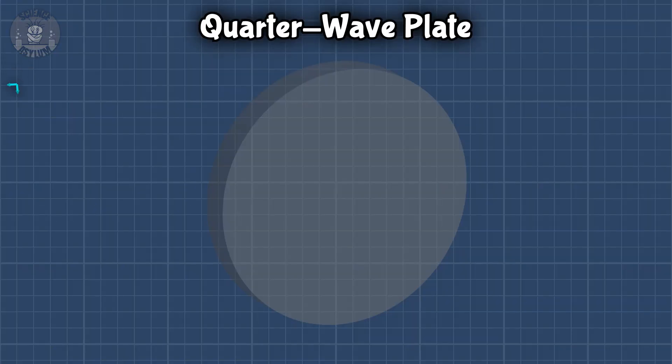3D glasses have one of those birefringent materials in them. If you make the material just the right thickness, the pieces of light will come out one quarter of a wave out of sync. So it shouldn't be any surprise we call this a quarter wave plate. Combining the pieces again, we see that the light is circular polarized.